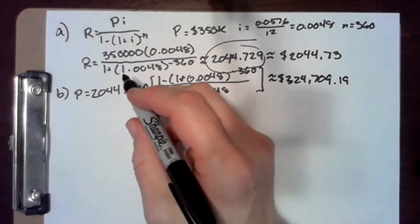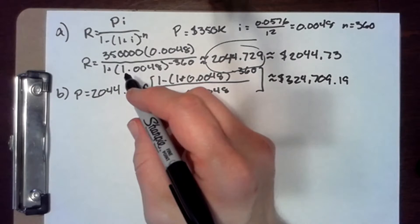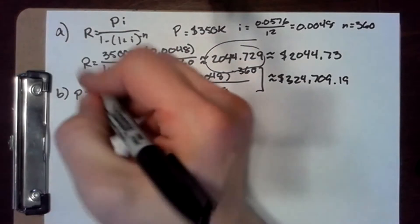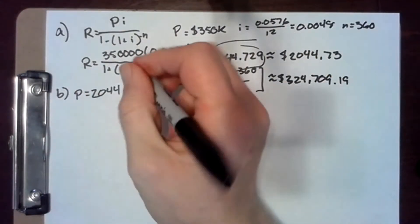We now compute the amount of their new mortgage payment. For the remaining term, we've already gone five years, so now we need to go an additional 25 years or 300 months.